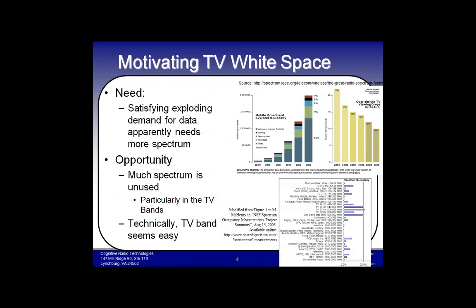The FCC has specified regulations to ensure coexistence with primary users, converging on a database and geolocation technique for TV white space. Similar techniques have been proposed for the 3.65 GHz band with light registration, and other techniques will need to be developed for more aggressive sharing with radar systems. The general assumption is that devices have location and timing information from GPS, and access to a database that provides a mechanism for coordination.